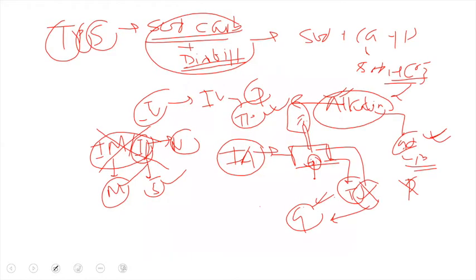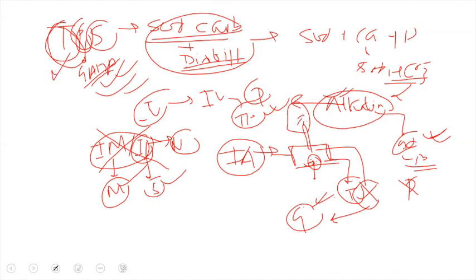To summarize so far: thiopental sodium contains pentobarbital, which is a GABA agonist barbiturate, acting with hypnosis and amnesia properties required for anesthetic purpose. Sulfur makes it highly lipid soluble, and sodium carbonate mixed with distilled water as sodium bicarbonate creates an alkaline medium, which causes the adverse effects discussed.